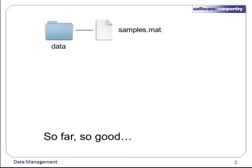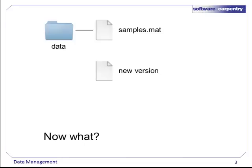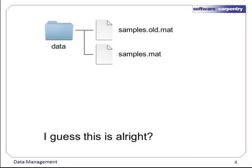In my experience, data file management usually goes something like the following. First you have one data file — all is well with the world. Then you come up with a revision. Some people directly overwrite the old data, but eventually you'll want to compare the new and old data, or you'll find out the new data actually isn't correct and the old data is better, or something will come up and you'll wish you hadn't deleted it. So rather than overwriting the old file, you add 'old' to the name and put the new file in the same spot. This is still pretty clear, but hopefully your spidey sense is warning you of danger.